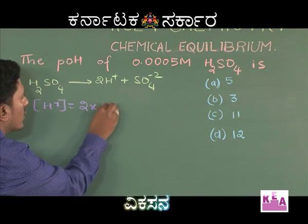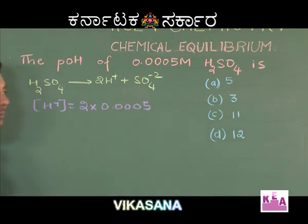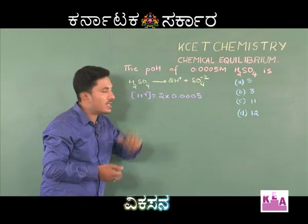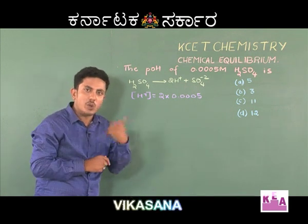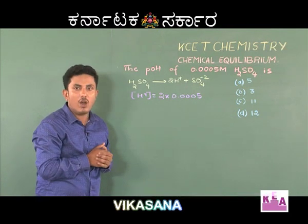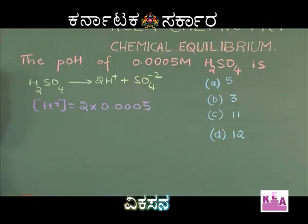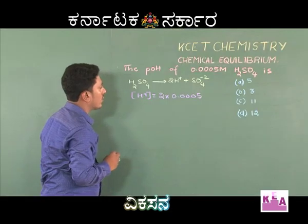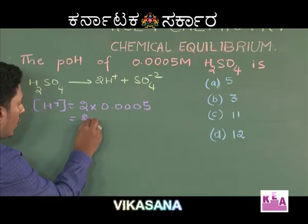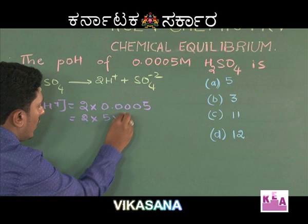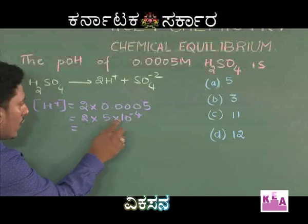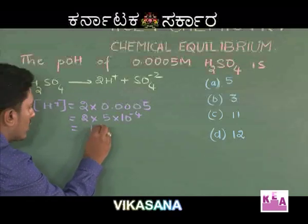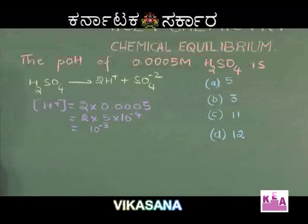In this problem, 0.0005 molar H₂SO₄ is given, hence H⁺ ion concentration = 2 × 0.0005 molar. For a weak acid or weak base, H⁺ ion concentration is not equal to the given concentration and must be found using c·α or √(Ka × c). Here, H⁺ = 2 × 5 × 10⁻⁴ = 10 × 10⁻⁴ = 10⁻³ molar.